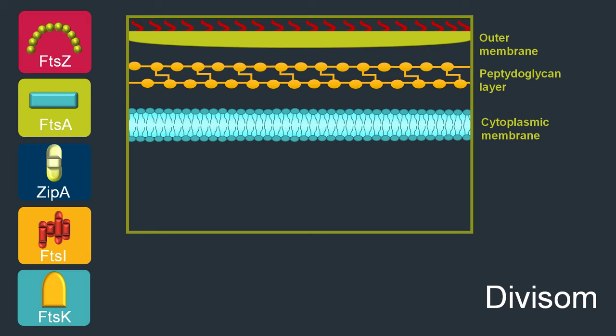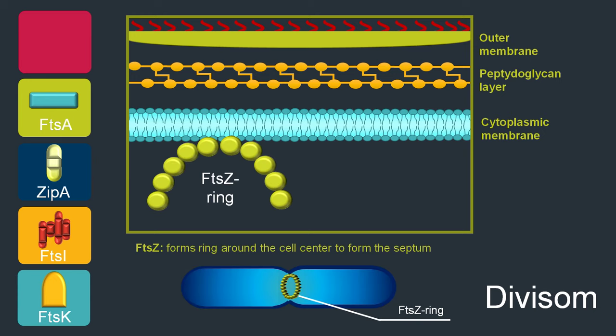One key FTS protein is called FTSZ. Structurally, FTSZ shows many similarities to the eukaryotic tubulin, which is a major component of the eukaryotic cytoskeleton. During cell division, FTSZ moves to the division site and recruits other proteins to build the dividing apparatus named the divisome. In rod-shaped bacteria, FTSZ locates itself in the middle of the cell, where these proteins bind each other to form a ring around the cell body. In E. coli, around 10,000 FTSZ molecules are needed to encompass the cylindric cell, and this ring defines the site at which cell division takes place.